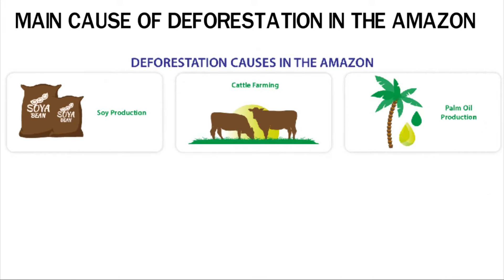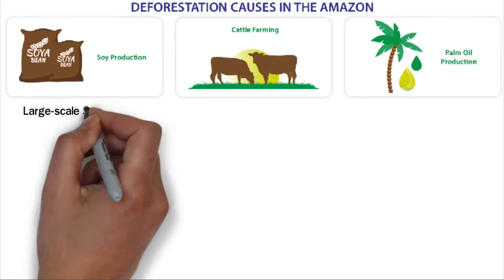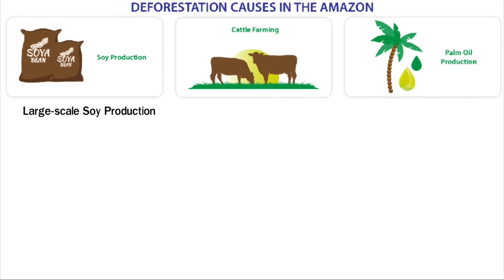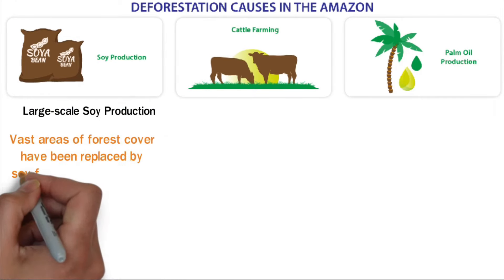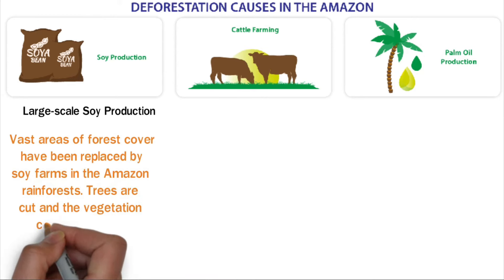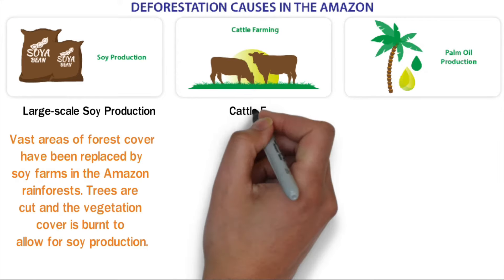Main causes of deforestation in the Amazon: Like most rainforests found in the tropics, the main cause of deforestation in the Amazon includes large-scale soy production. Vast areas of forest cover have been replaced by soy farms in the Amazon rainforests. Trees are cut and the vegetation cover is burnt to allow for soy production.